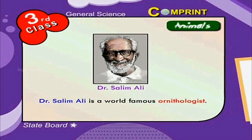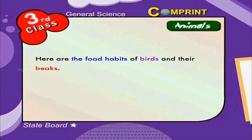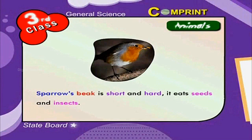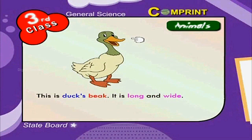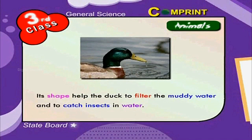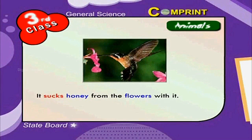Dr. Salim Ali is a world-famous ornithologist — that means a person who studies birds. Here are the food habits of birds and their beaks. The sparrow's beak is short and hard; it eats seeds and insects. The parrot's beak is red with a curved shape; it eats fruits and seeds. The duck's beak is long and wide; its shape helps the duck to filter muddy water and catch insects in the water. The hummingbird's beak is just like a needle; it uses it to suck honey from flowers.